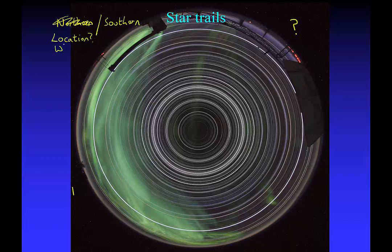When was the photograph taken? If you look very carefully, you'll notice that there's one thing missing. Those stars have gone completely around the sky, which means you're talking about a 24-hour period, and yet the Sun has not come up. So it must be at the South Pole, and it must have been taken during the winter. If you're at the South Pole, for six months of the year the Sun is permanently in the sky during summertime, and for six months of the year the Sun sets and doesn't come back up again. So that's why there's no Sun in the sky during that 24-hour period — it must be winter at the South Pole.